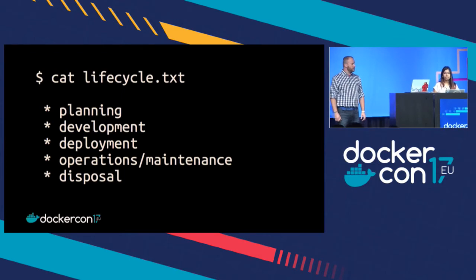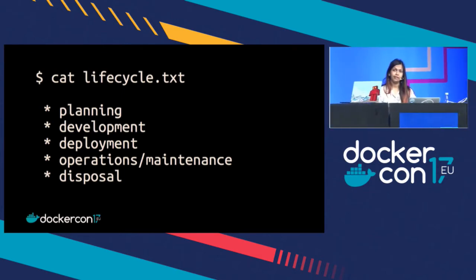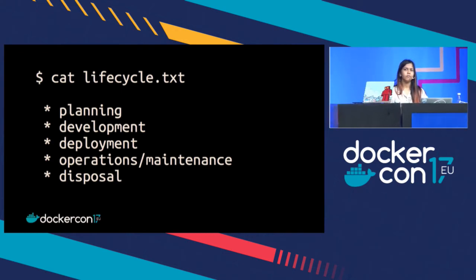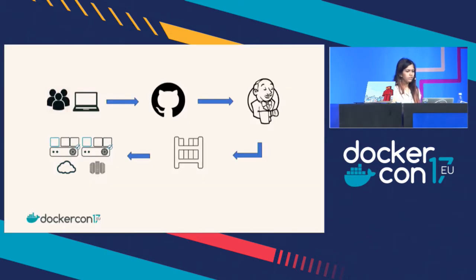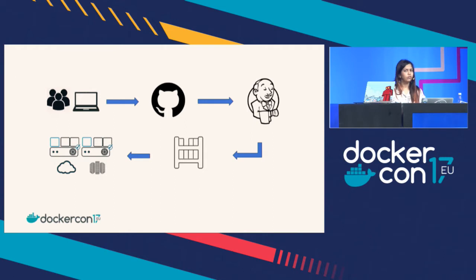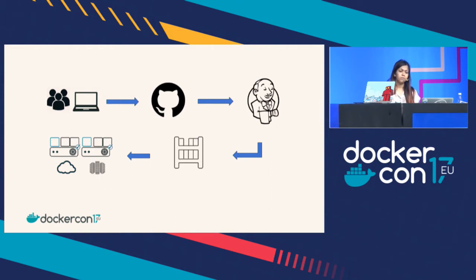Before you even get to the creation step, there is planning about what you're actually going to build. Then there's the actual development of the product. Then there's deployment — you need to get the product out there to your customers and users. And then there's some maintenance and disposal, depending on how you provide support for the product. This can actually map mostly one-to-one if you think of the lifecycle of software development. You plan the features you're building, you have software developers write the code, then you ship it out, package your product, release it, and fix bugs as they come up.